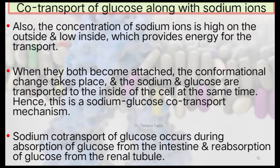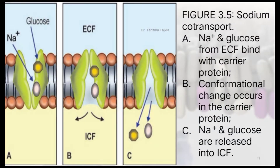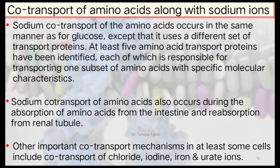This figure shows how sodium and glucose are co-transported. The concentration of sodium ion is high on the outside and low inside, which provides energy for this transport. When both sodium and glucose become attached, a conformational change takes place and both are transported to the inside of the cell simultaneously. Sodium co-transport of glucose occurs during absorption of glucose from the intestine and reabsorption of glucose from the renal tubule.